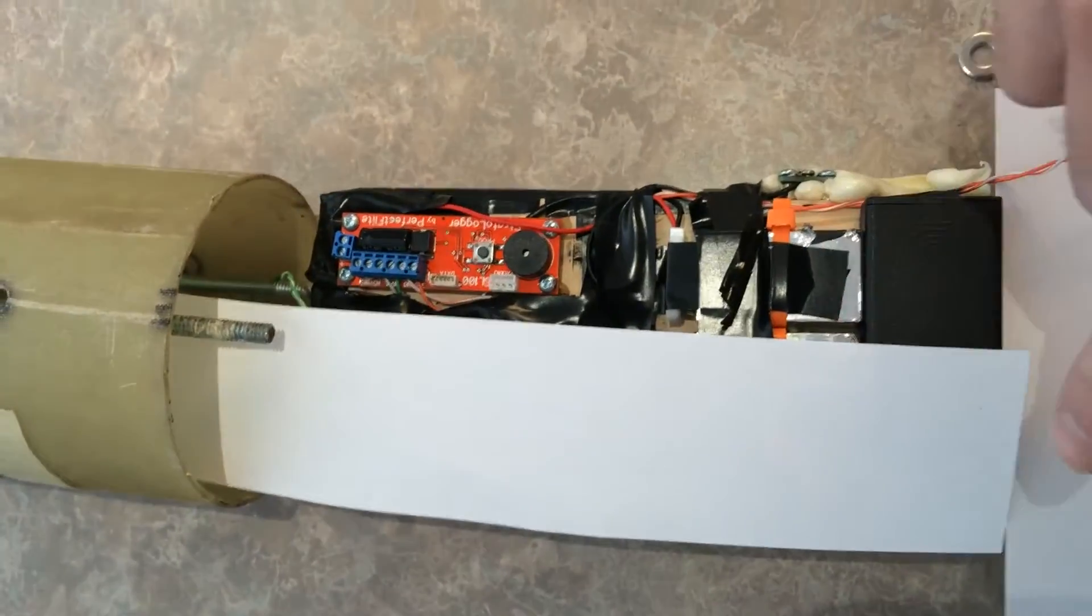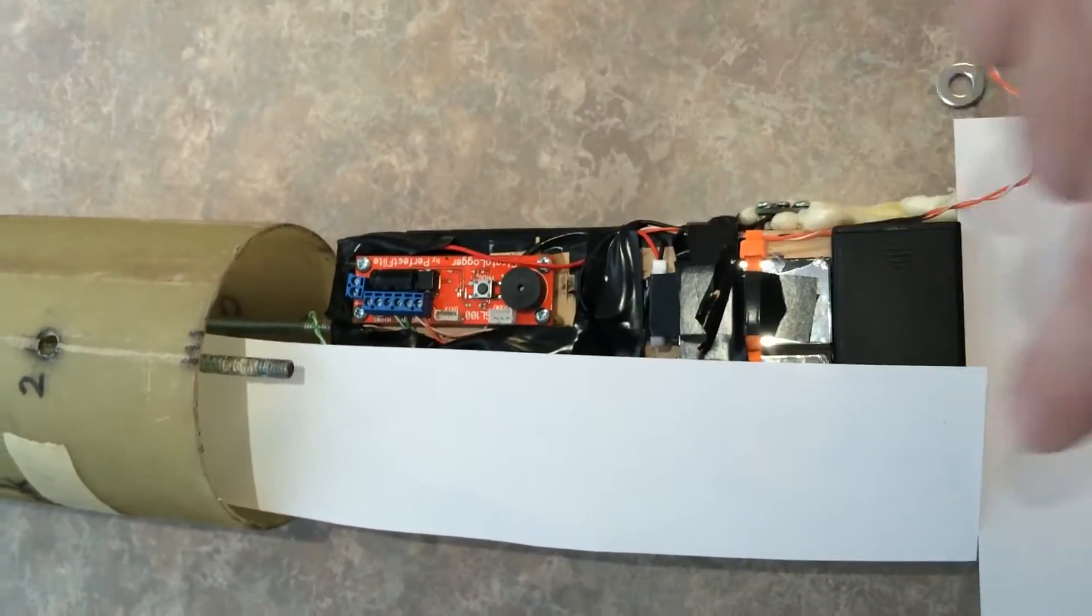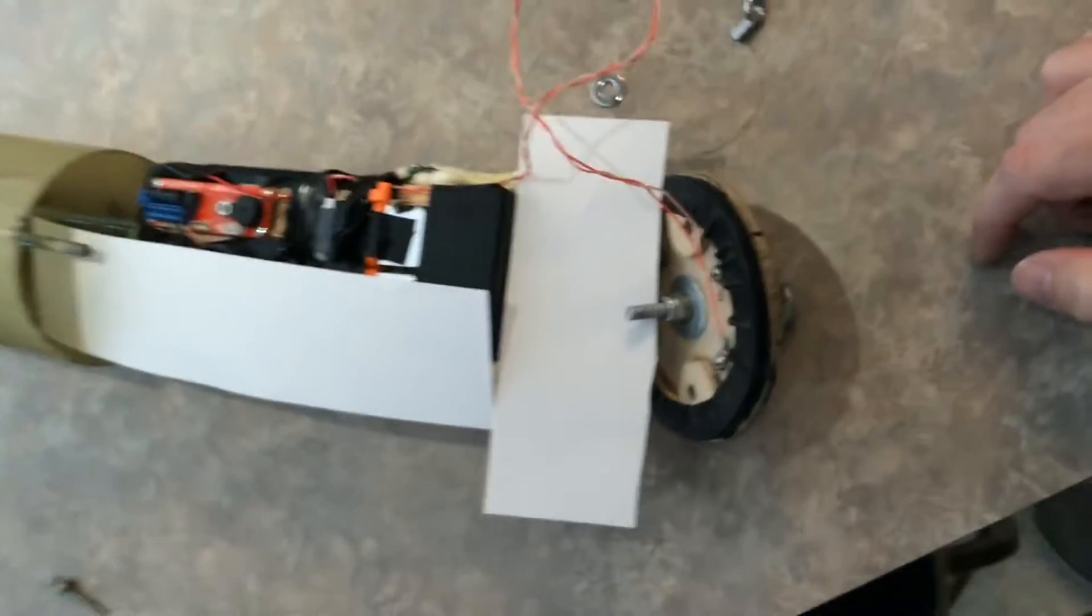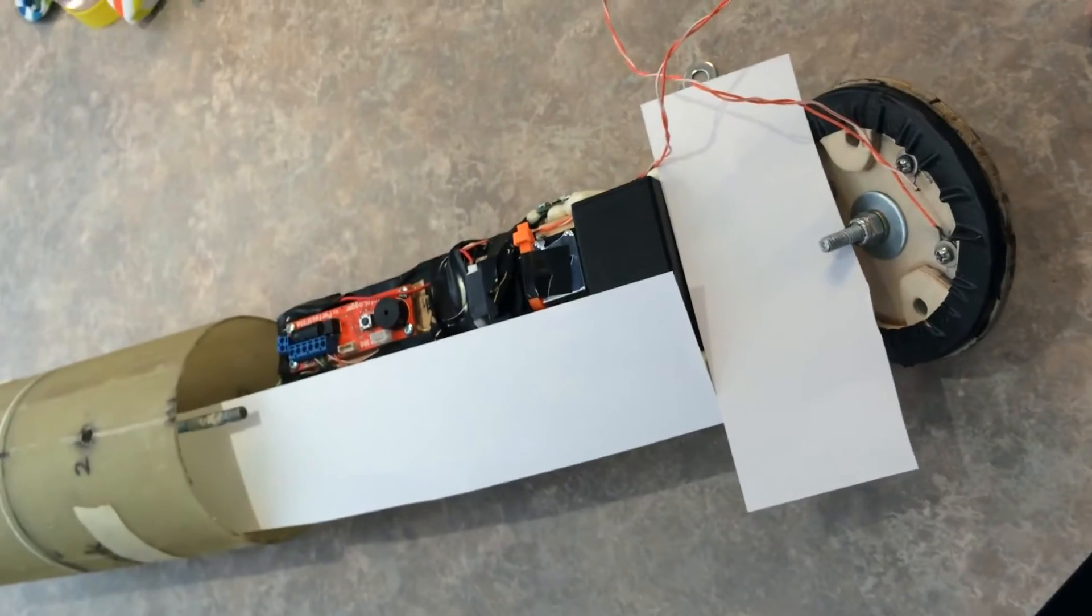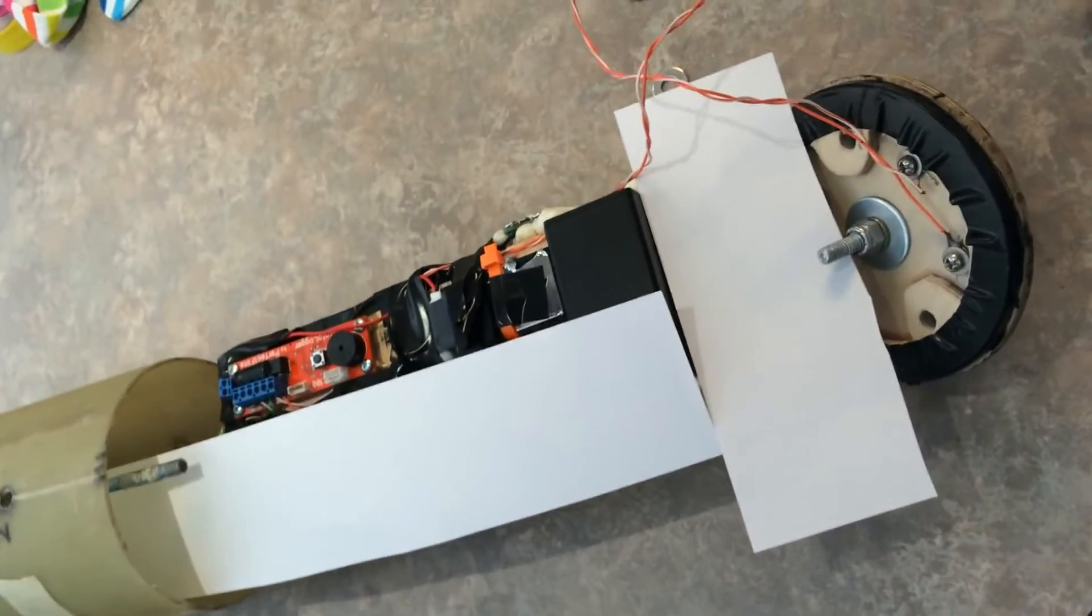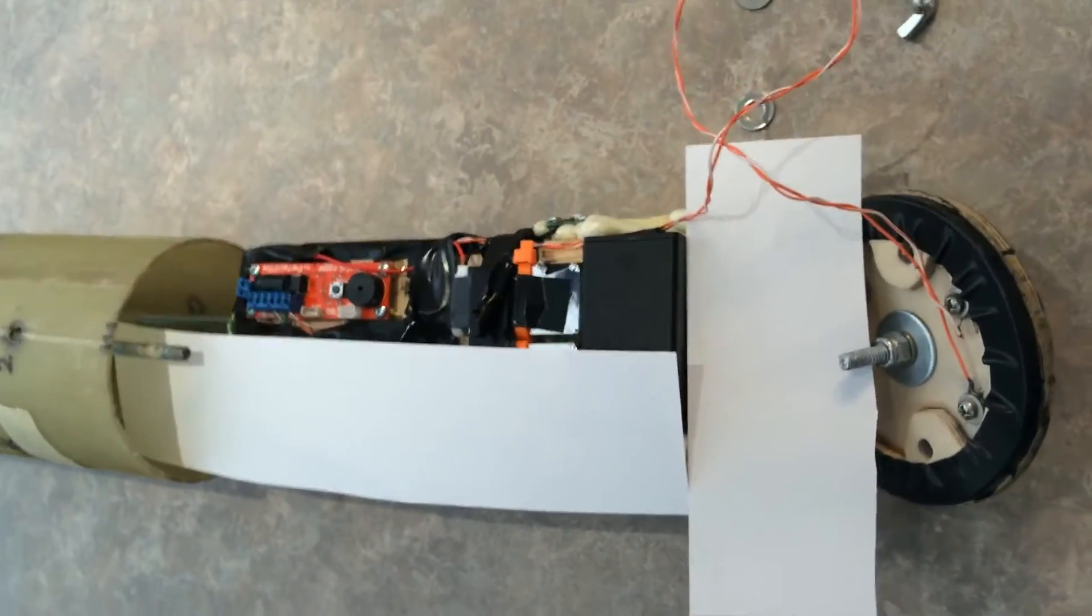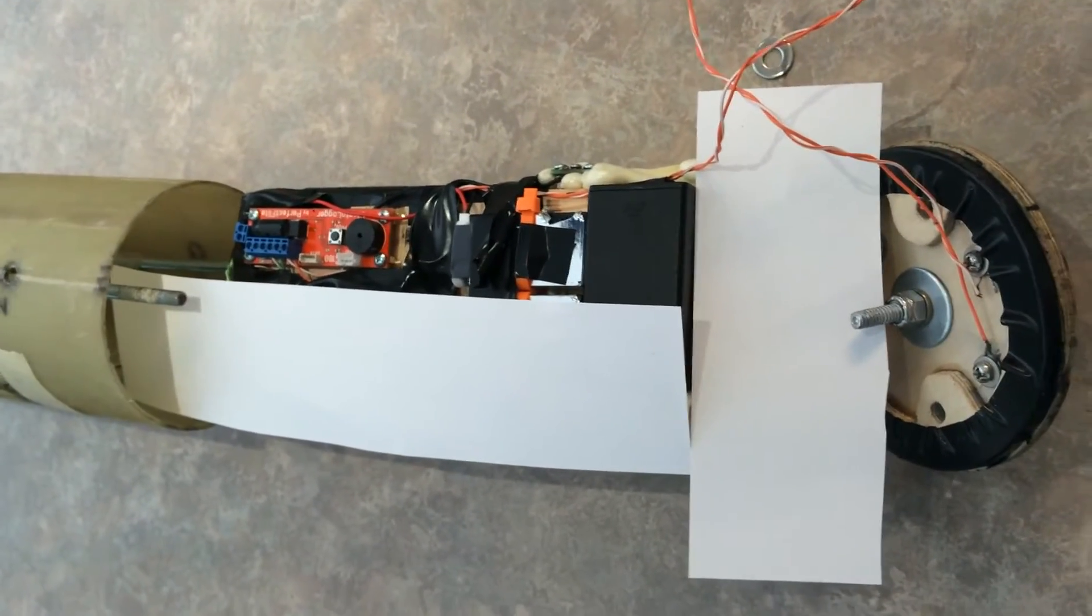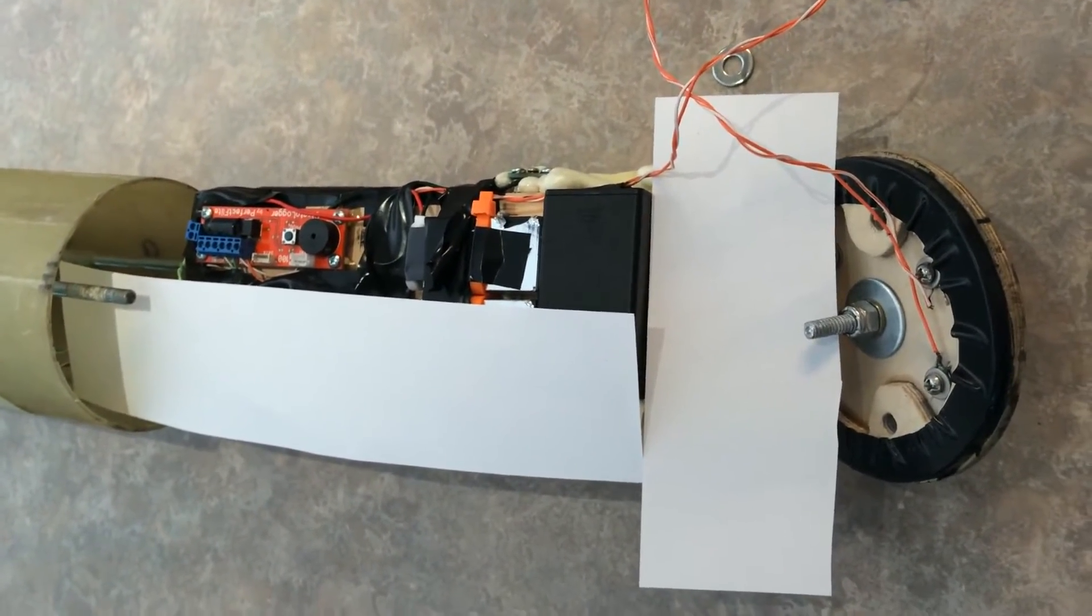Behind this white sheet of paper is the second Stratologger I have for more advanced flight where you want a backup system in case your primary fails. I'm not discussing that today. I will show it probably later towards the end of the video.